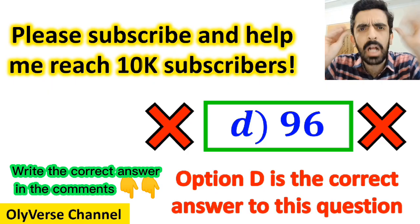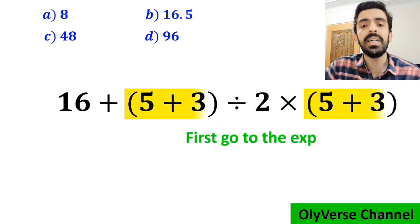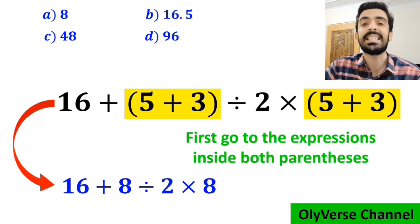However, this answer is absolutely wrong. Also, some other people when solving this question first go to the expressions inside both parentheses and simplify it to 16 plus 8 divided by 2 times 8.